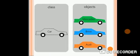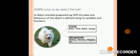Now children, let us see if you can identify the class and the objects in this figure. We can say that 'Car' is the class, and the objects of the Car class are Mercedes, BMW, and Audi. We will take the same example and see that how a class is an object factory. In object-oriented programming (OOP), the state and behavior of the object is defined by using its variables and functions.